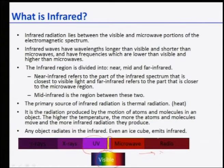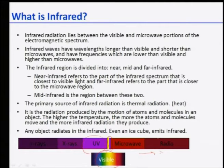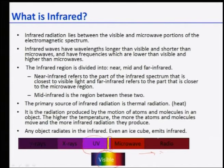The infrared region is divided into three parts: mid-infrared, near-infrared, and far-infrared. Near infrared is the part closest to visible light, far infrared is closer to microwave, and mid-infrared is between the two. The primary source of infrared radiation is thermal — basically heat. This radiation is produced by the motion of atoms and molecules; the higher the temperature, the more infrared radiation is emitted.